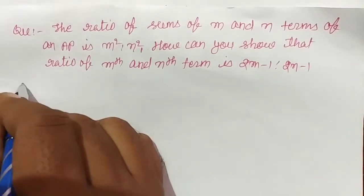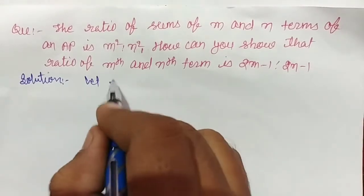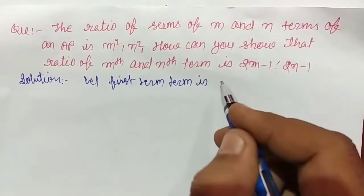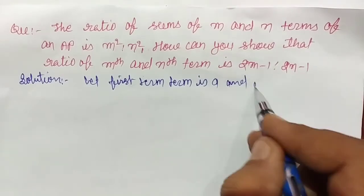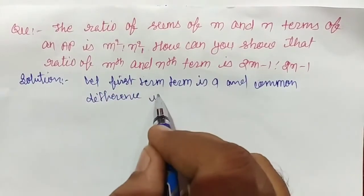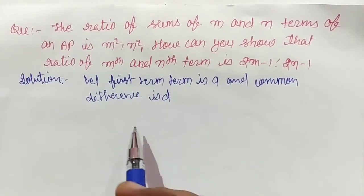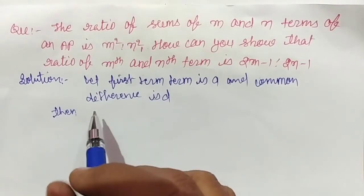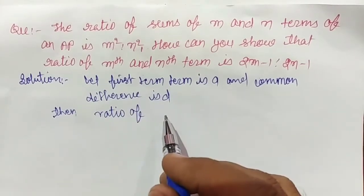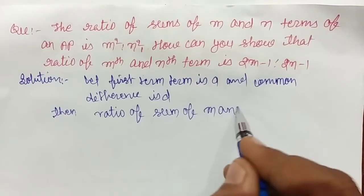To solve this, let first term be 'a' and common difference be 'd'. We have assumed first term as 'a' and common difference as 'd'. Then we write the ratio of sum of m and n terms.